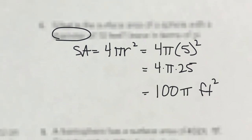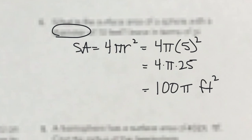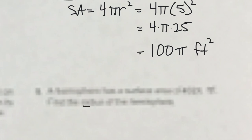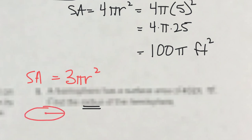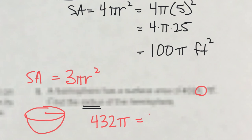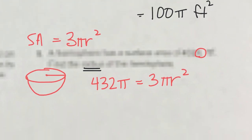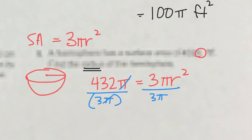Expect 5 or 6 straightforward plug-and-chug formula problems on the test, and then there's an algebra section — find the radius. A hemisphere uses a 3 pi r squared formula: it has a circular base with area pi r squared, plus 2 pi r squared for the curved part. Don't forget to include pi when transposing. The pi terms cancel out, so 432 divided by 3 is 144, and taking the square root gives a radius of 12 feet.